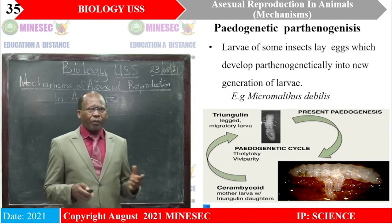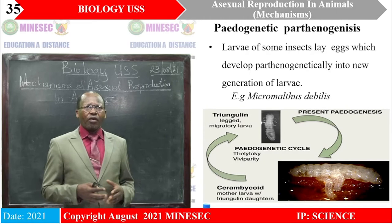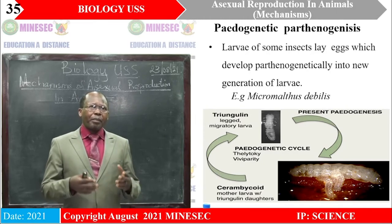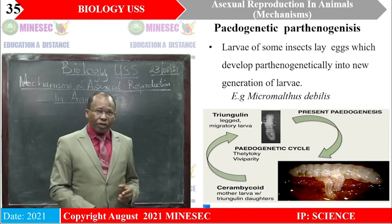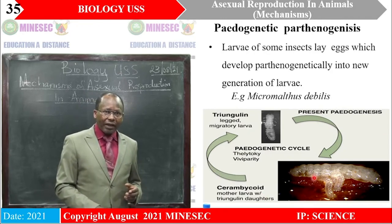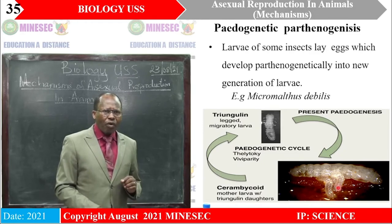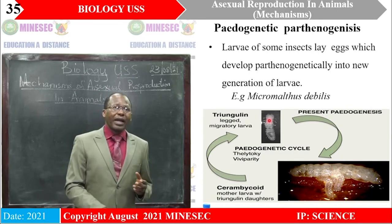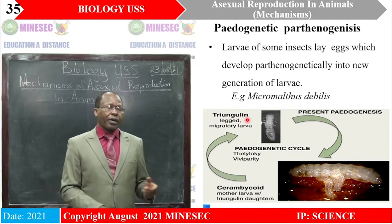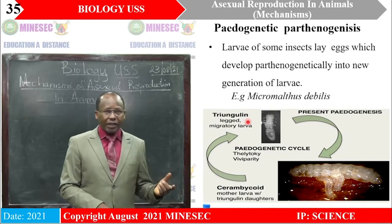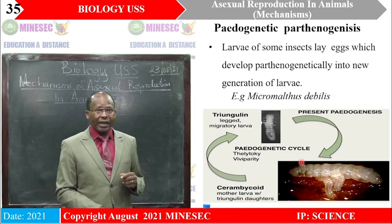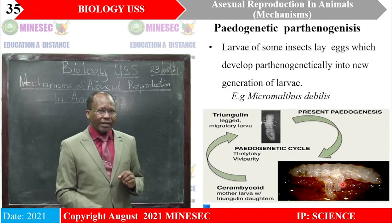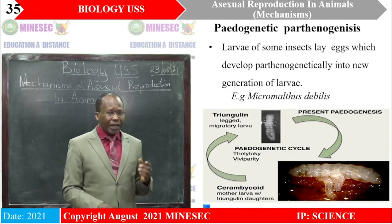We also have another example — paedogenesis — where the larvae of some insects lay eggs which develop parthenogenetically into a new generation of larvae. We see a larva here, and the young ones have the same genetic makeup as this mother larva. Normally in insects, larvae do not reproduce, because the larva is supposed to change into a pupa (in complete metamorphosis) and then into an adult, and it is the adult that lays eggs. But in this special process, larvae are able to give rise to young ones. So we actually see that parthenogenesis is a special form of reproduction.